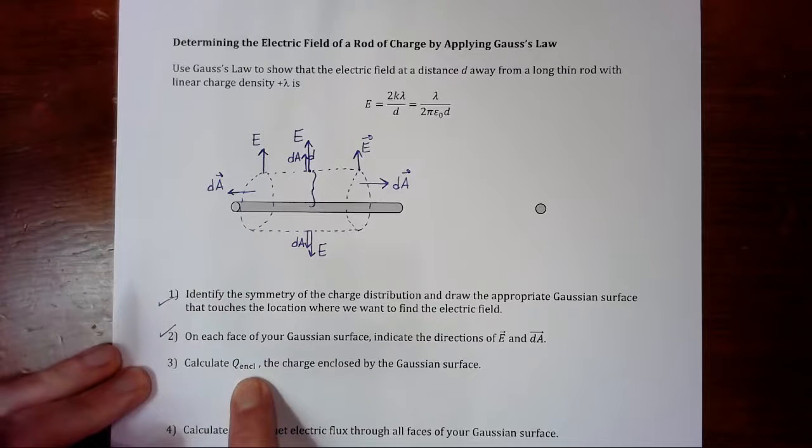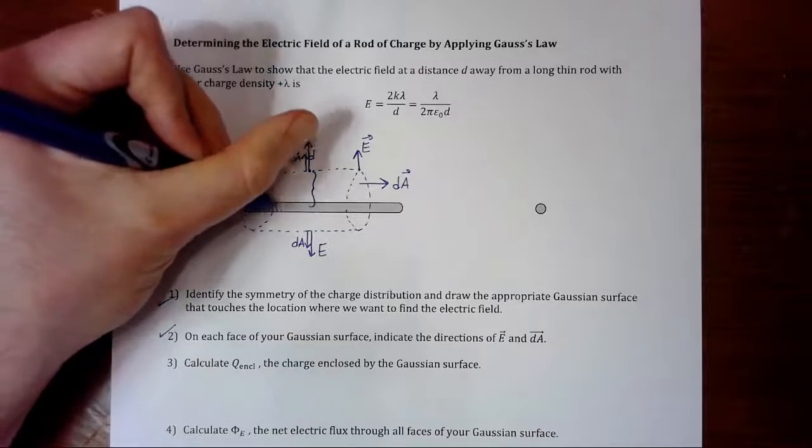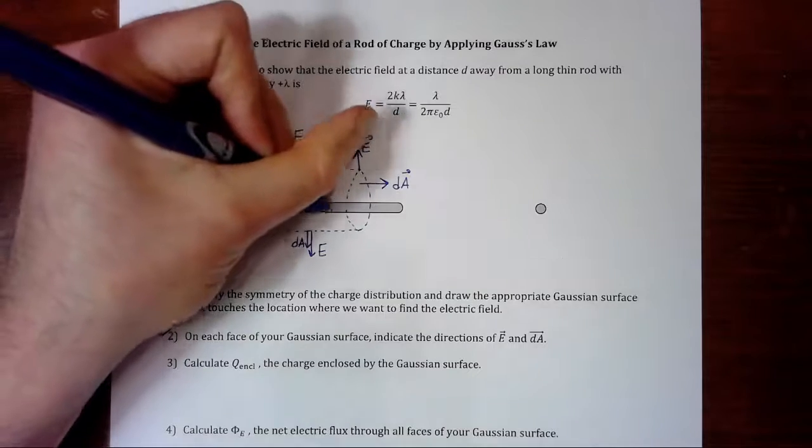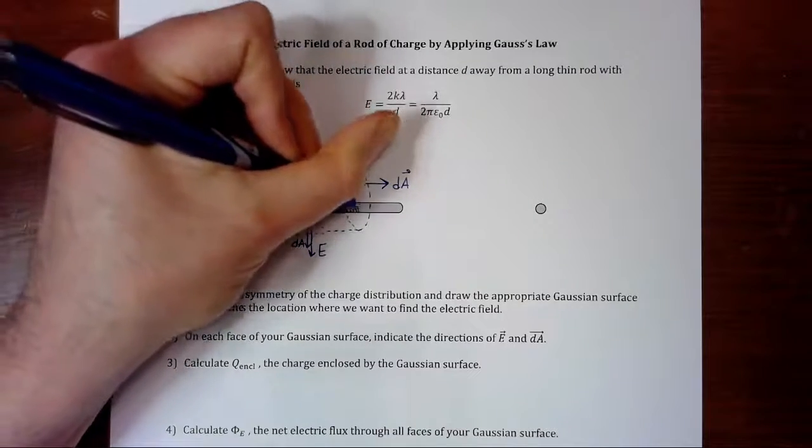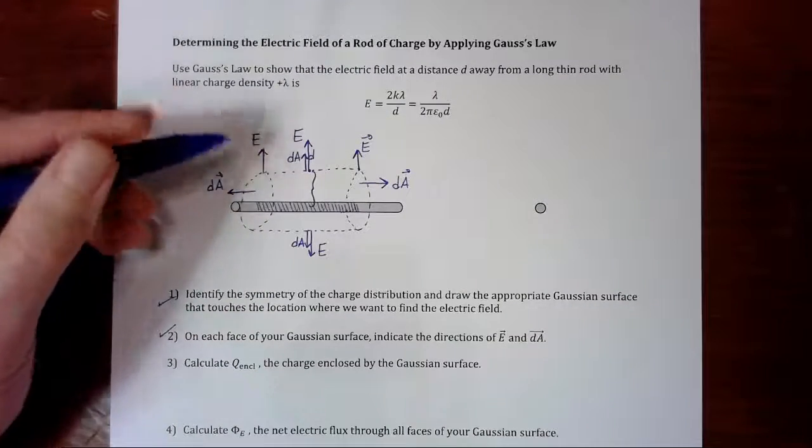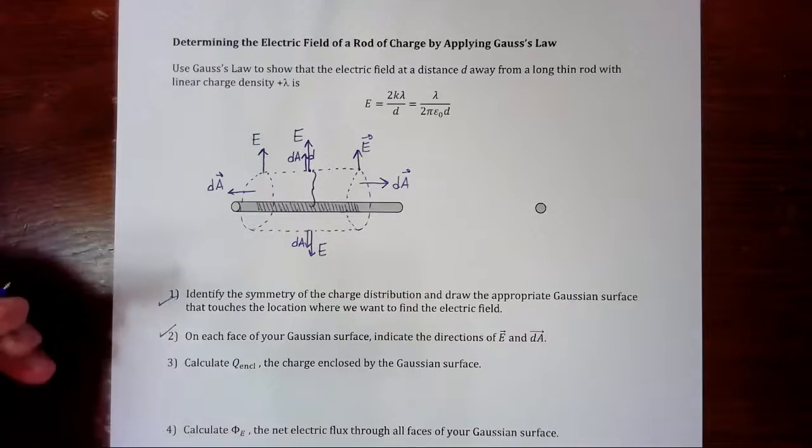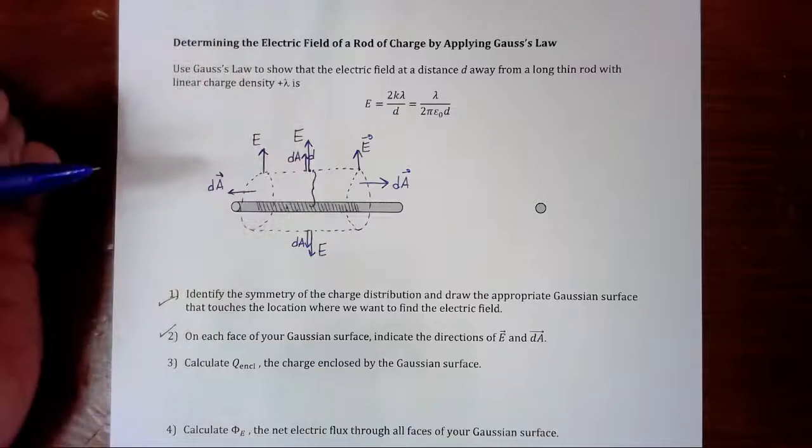Next, calculate Q enclosed, the charge enclosed by the Gaussian surface. So, our Gaussian surface encloses about this area of the rod. It doesn't enclose the entire rod, the rod is really long. And we're just putting a small Gaussian cylinder across just a section of the rod.